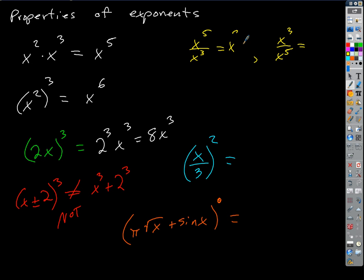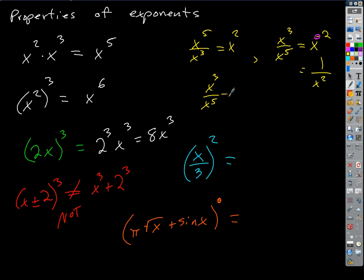X cubed over X to the 5th gives X to the negative 2. Our property of negative exponents: X to the negative 2 is the same as 1 over X squared — if you have a negative exponent in the top of the fraction, it goes to the bottom. A negative exponent on the bottom becomes positive on the top. As a shortcut: if I have X cubed over X to the 5th, I keep the X where it has the most power — on the bottom — and just subtract to get a 2, giving 1 over X squared.